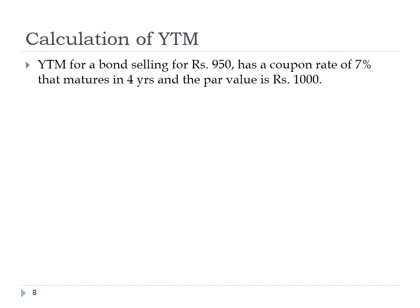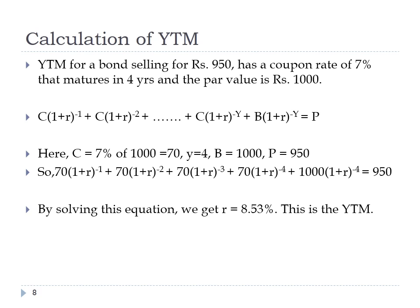As an example, let's calculate the yield to maturity of a bond selling at rupees 950 with a coupon rate of 7% that matures in 4 years with a face value of rupees 1000. C is the annual interest payment: 7% × 1000 = 70. Y is 4 years, B is 1000, and P is 950. By substituting in the equation we get r = 8.53%, which is the YTM. The current yield is 70/950 = 7.37%.